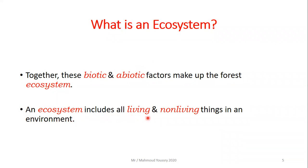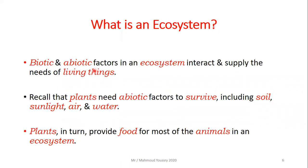An ecosystem includes all the living and non-living things in an environment — meaning it includes all the biotic and abiotic factors in an environment. The biotic and abiotic factors in an ecosystem interact and supply the needs of the living things.